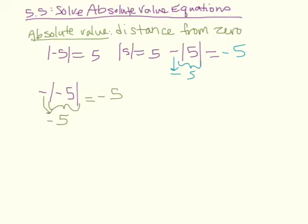One more thing you need to know: if you have something like the absolute value of three minus five, you treat the stuff inside the absolute value bars like parentheses. If you remember from the order of operations, you always do parentheses first. Subtract three minus five, you get negative two. Then the absolute value of negative two is going to be positive two.